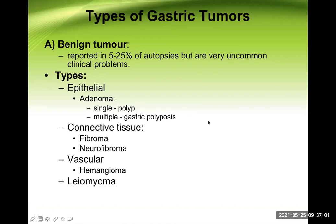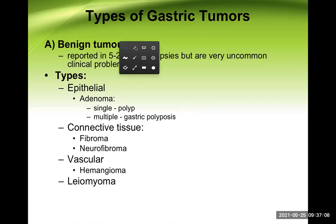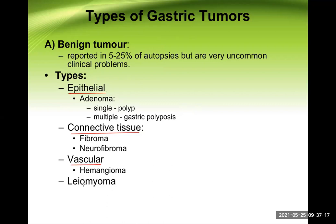These are the types of gastric tumors, benign as well as malignant. Regarding the benign tumor, these are the names: epithelial tumors, connective tissue tumors, vascular tumors, and smooth muscle tumors.